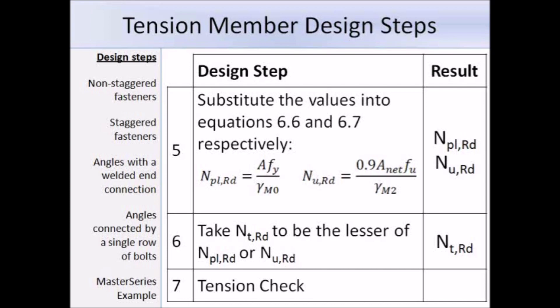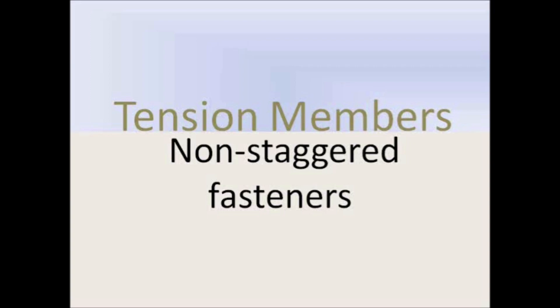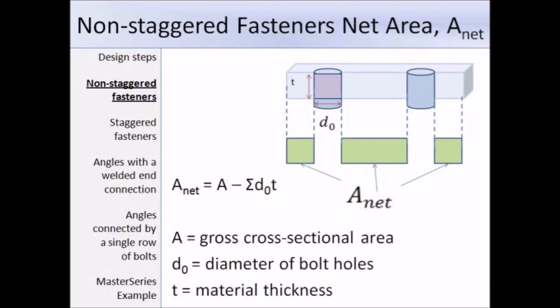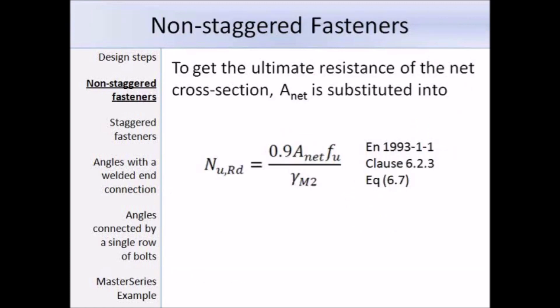The next section deals with non-staggered fasteners. To work out the net area, the total area to be deducted should be taken as the sum of the areas of the holes on any line perpendicular to the member axis passing through the centre line of the holes. For example, along line AA, we take the gross area minus the area of fastener holes along that line. The net area equals the gross area minus the sum of the bolt hole diameter times the material thickness. Since we are dealing with fasteners we use equation 6.7 with the net area, ultimate tensile strength, and partial factor of 1.25.